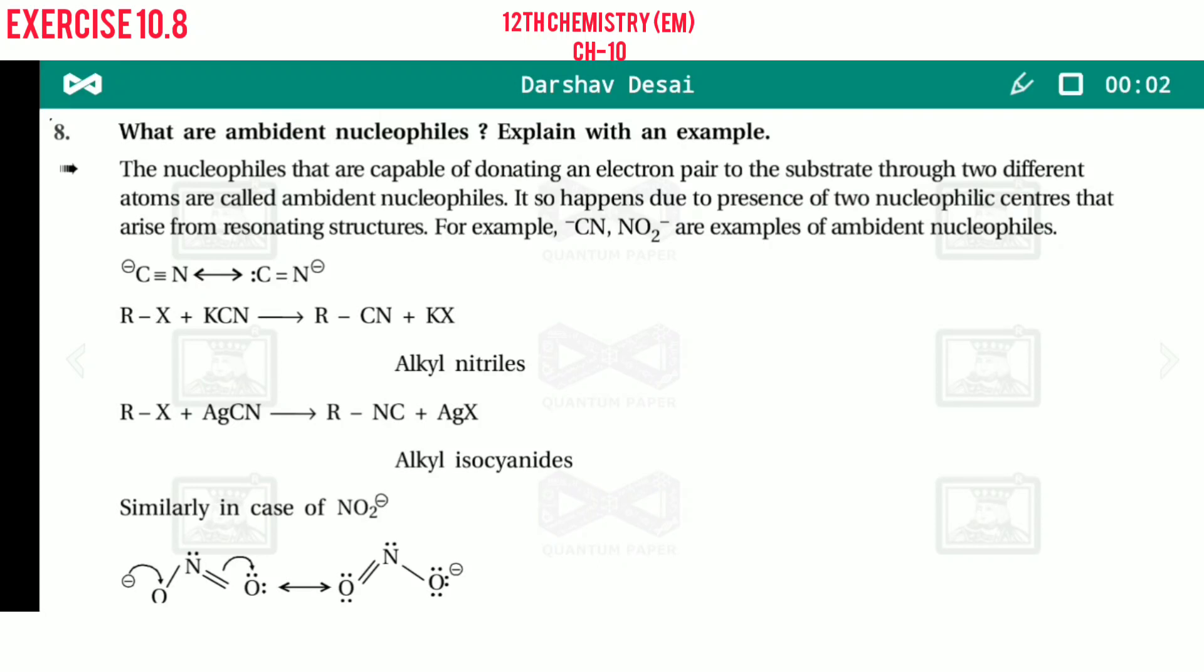Today I am talking about question number 10.8, exercise 10.8 from chapter number 10. So the question is, what are ambident nucleophiles? Explain with an example.